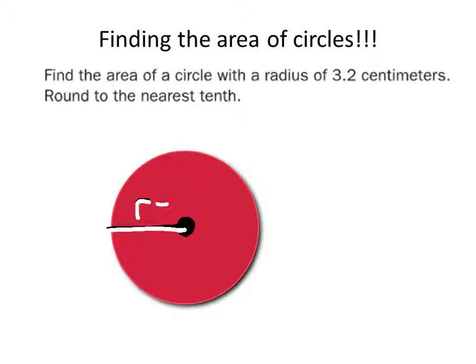So, let's say the radius in this case was, I don't know, 2. How would we find the area of this circle? Pi times 2 squared. Very good. Pi times 2 squared.